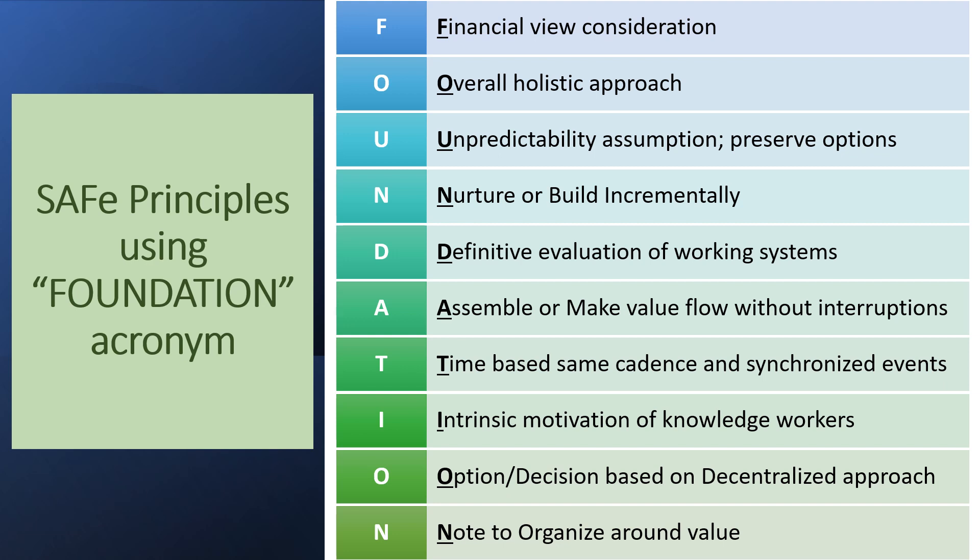I stands for Intrinsic Motivation of Knowledge Workers — giving the right autonomy to our teams and helping them have the right motivation so they feel very much part of the product development. The second O stands for Option or Decision based on a Decentralized Approach — certain decisions the team can take themselves, which is faster and empowers them. The final N stands for Note — we organize our work around value.